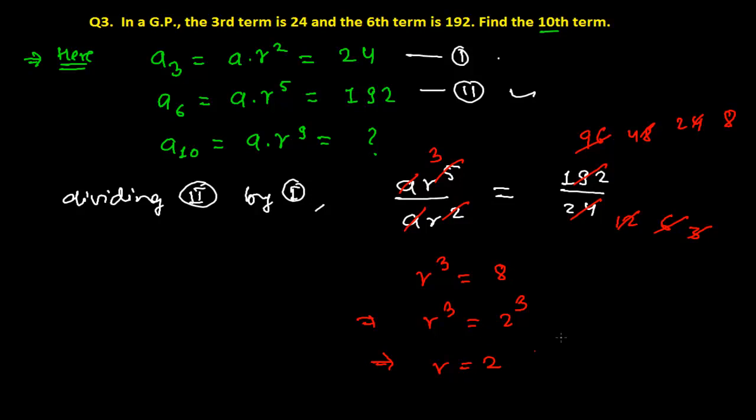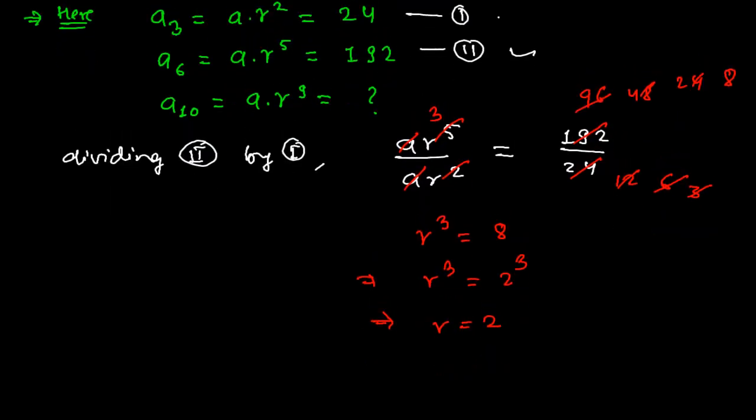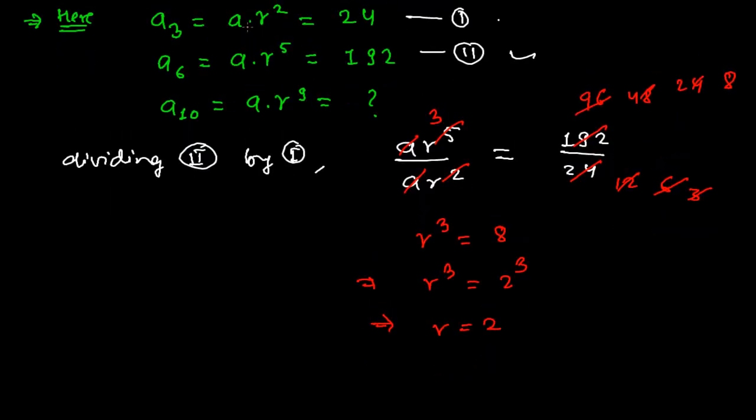Now we can easily find out the value of a, the first term. From equation 1, the first term times r squared equals 24. It means the first term, I don't know, but I know r is 2. So 2 squared equals 24.